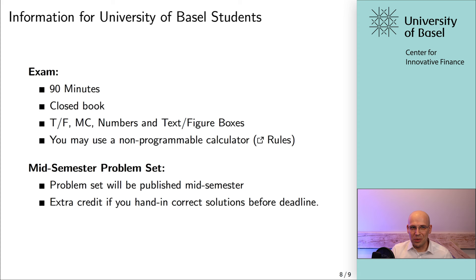Before we get started, I have some important information for our University of Basel students. At the end of the semester you will have to take a final exam — a 90-minute closed-book exam. It will be a combination of true-false and multiple choice questions, and you will have text boxes and number boxes. You may use the usual non-programmable calculator as defined by the official list on our faculty website. In addition to the exam, there will be a mid-semester problem set, available to everyone, but if you're officially enrolled you can get extra credit for solving it and handing it in before the deadline.